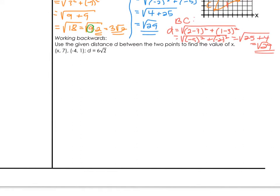It says use the given distance d between the two points to find the value of x. We have (x, 7) and (-4, 1), with the distance between them being 6 times the square root of 2. If we think about our process, we always identify the coordinates for our ordered pairs. Let's identify x1, y1 for that first set, and x2, y2 for the second set.